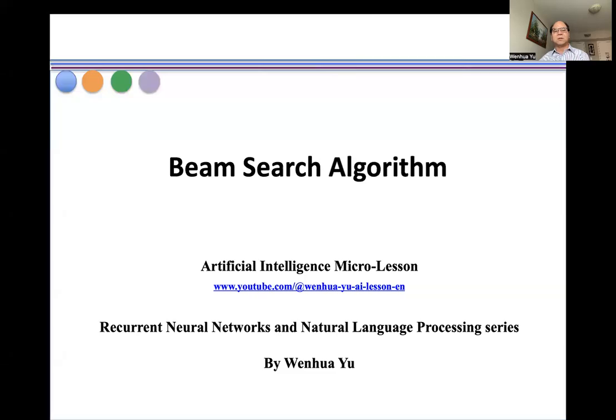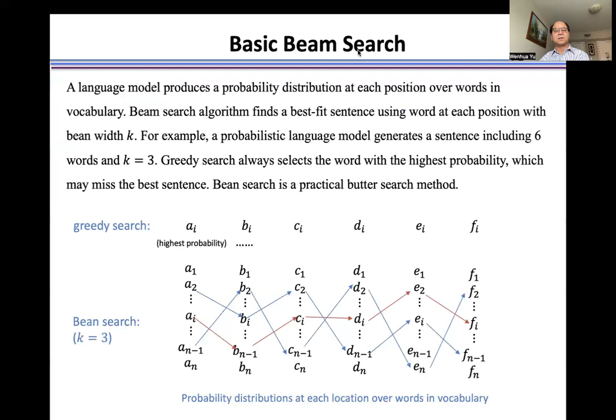In this video, I introduce a beam-search algorithm. A language model produces a probability distribution at each position over words in vocabulary. Beam-search algorithm finds a better fit sentence from the output of a language model close to the ground truth sentence.